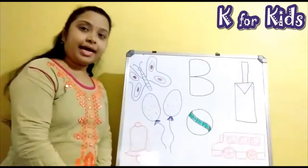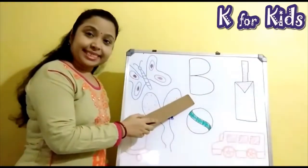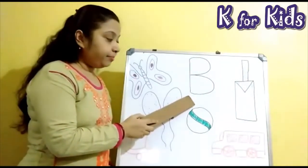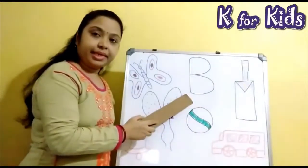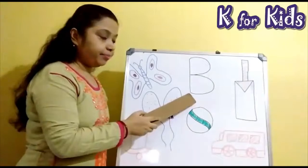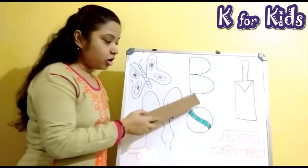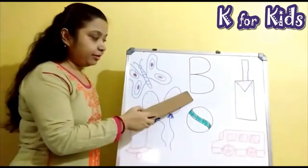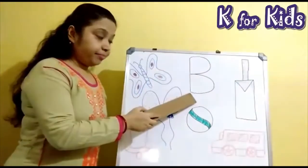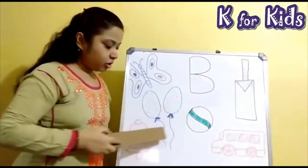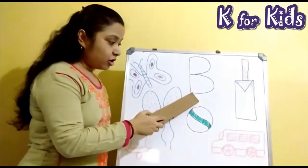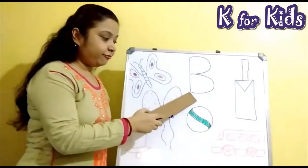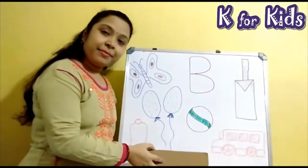Now children, again I am repeating. This is the alphabet B. B for bag. B for ball. B for butterfly. B for balloon. B for bell. B for bus.